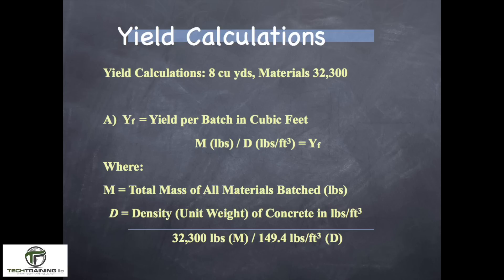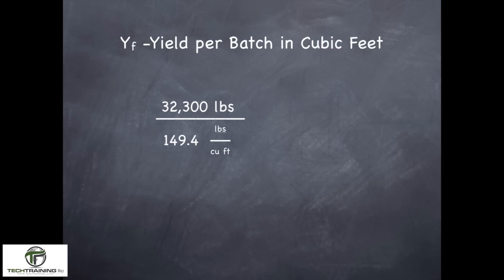Now that we have our unit weight, let's go ahead and do our first yield calculation. The first yield calculation is the yield of the batch in cubic feet. This is simply M, the weight of all the materials batched, divided by D, the density or unit weight that we just achieved. So here we had 32,300 pounds of material, and our unit weight was 149.4 pounds per cubic foot. Pounds will eliminate pounds, and we wind up with 216.2 cubic feet of material.